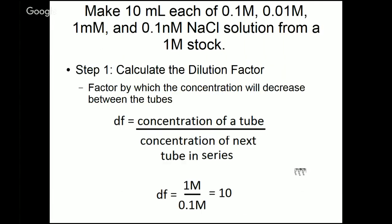Alright, so let's look at an example of how to do a serial dilution. Let's say that you want to make a series of tubes. You want them to each contain 10 mils of solution. And you want the concentrations to be 0.1 molar, 0.01 molar, 1 millimolar (which is the same as 0.001 molar), and 0.1 millimolar (which is the same as 0.0001 molar). So you want to make those salt solutions, and you are given a 1 molar stock to work with.